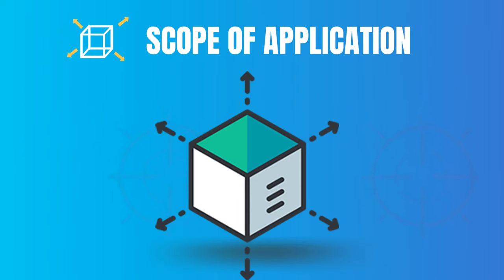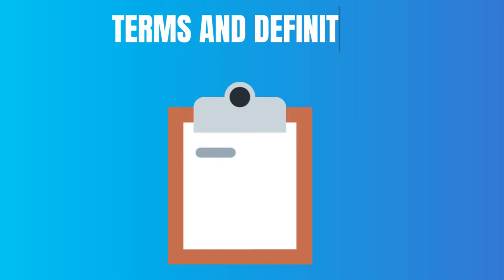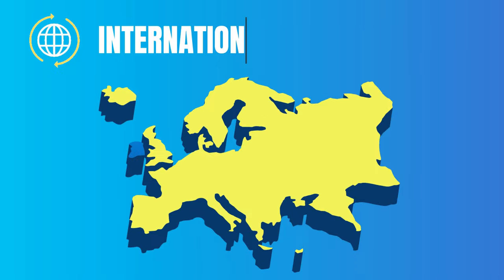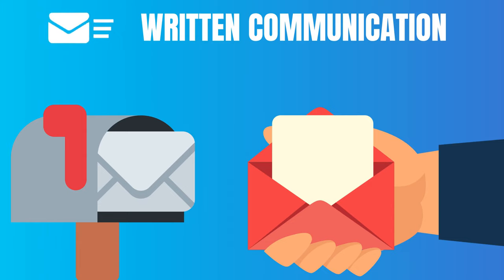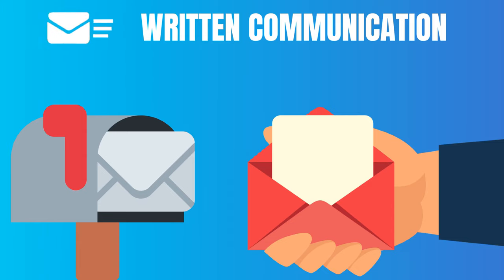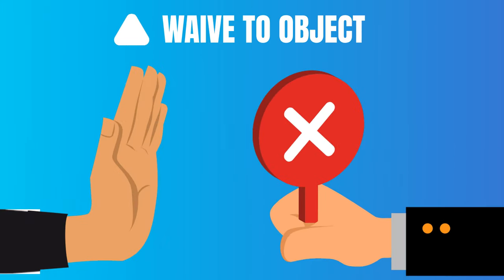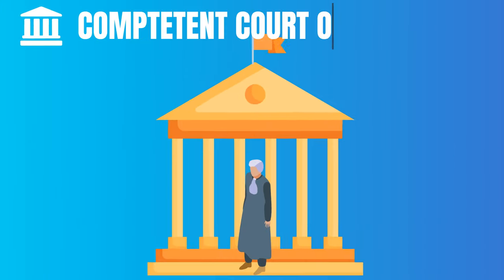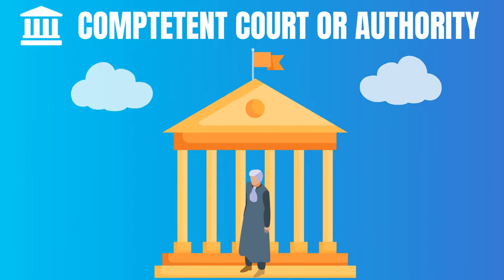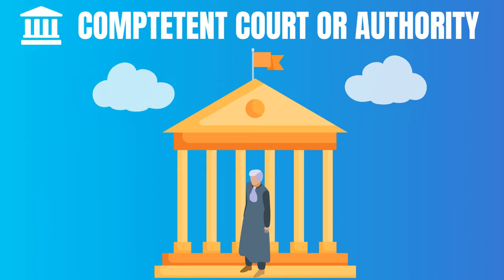The first introductory chapter explains the model law's scope of application, the main terms and definitions, when arbitration is considered international, when written communication is received, waiver of the right to object, and which court or authority can assist and supervise if needed.